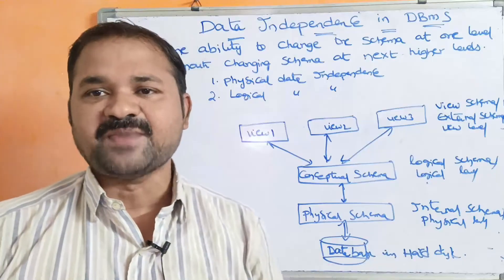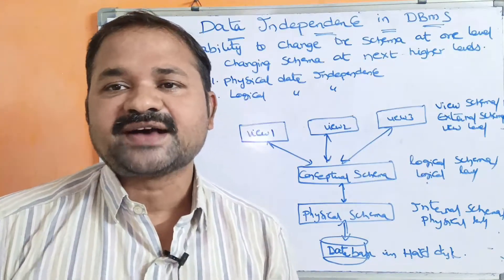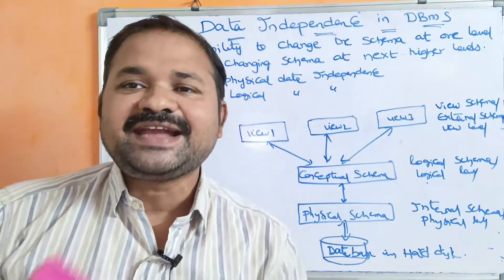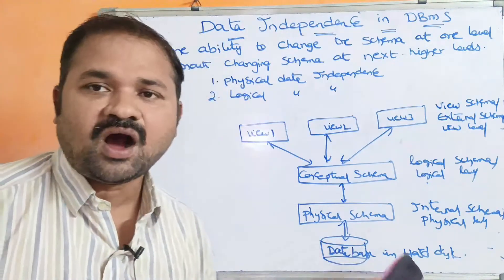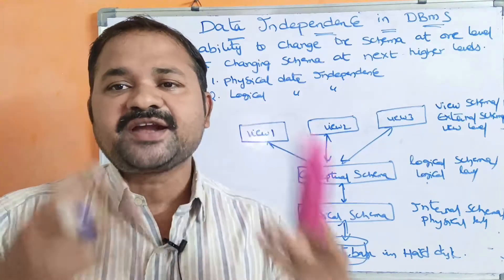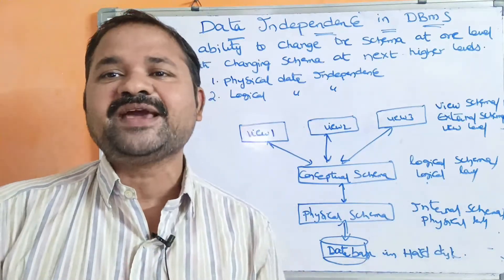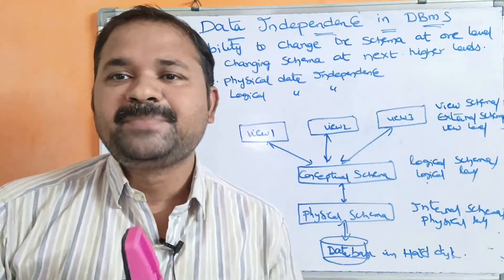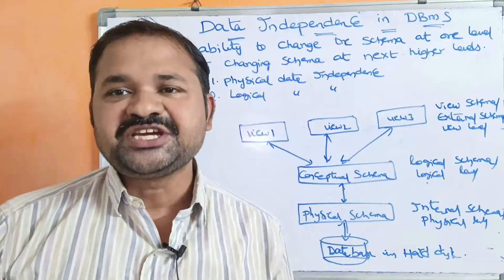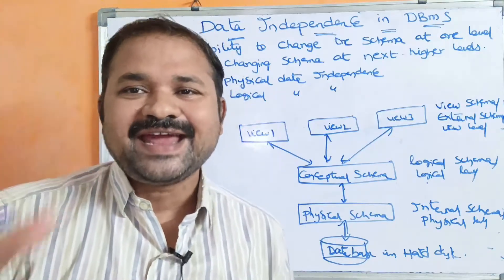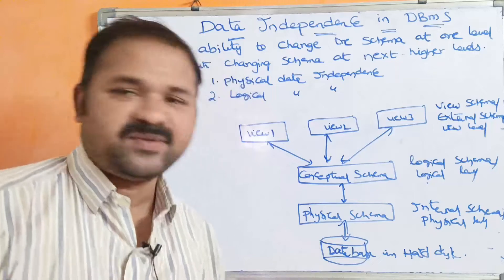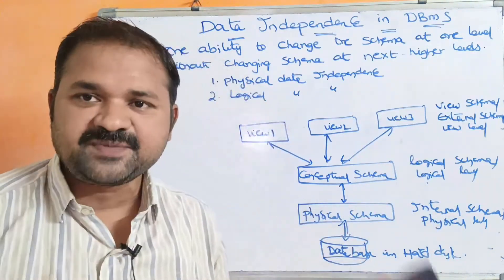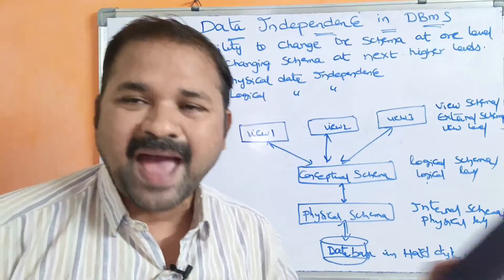Physical schema specifies how the data is stored. Generally, the data is stored either in hard disk or magnetic tape. In order to store data in the database, several techniques are used, like B-trees, B-plus-trees, and hashing. The data will be stored in secondary storage, which may be either hard disk or magnetic tape.